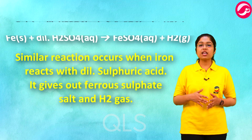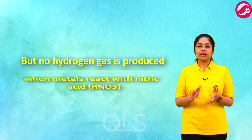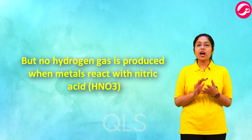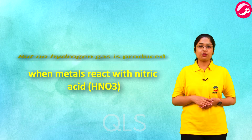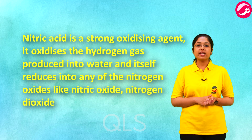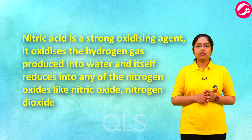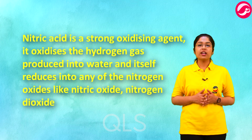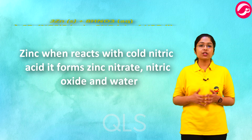A similar reaction occurs when iron reacts with dilute sulfuric acid — it gives out ferrous sulfate salt and hydrogen gas. However, no hydrogen gas is produced when metals react with nitric acid (HNO₃), because nitric acid is a strong oxidizing agent. It oxidizes the hydrogen gas produced into water and itself gets reduced into nitrogen oxides like nitrogen dioxide.